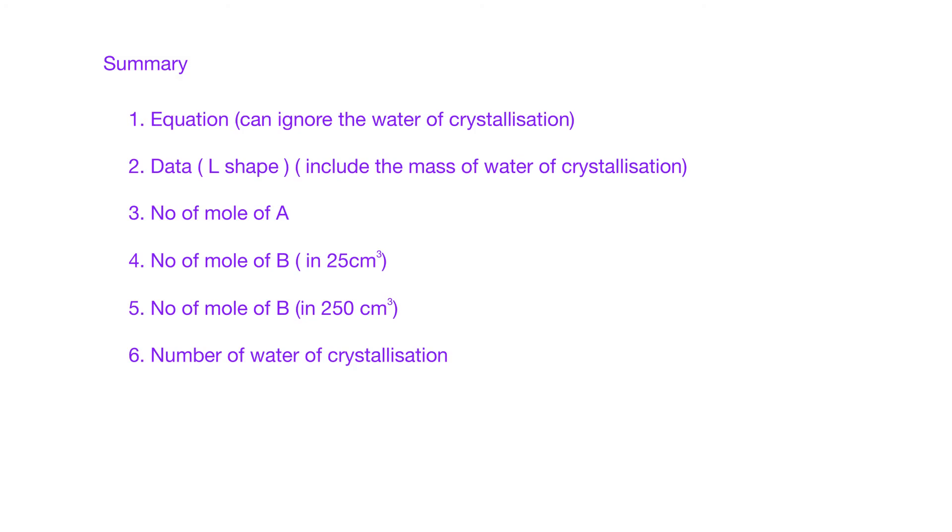So summary, basically, you have to write the equations. But in the equation, you can see that most of the time, I just ignore the water of crystallization will be easier for us to write. And remember for the L shapes, the L shape when you have the mass, the mass given to you all the time will include the water of crystallization bear in mind. And then we find number of mole of A, number of mole of B in 25, 250 cm³. Remember, normally we'll divide it by 25 times 250. And finally, we find a number of water of crystallization. So that's all for this video. Bye-bye.